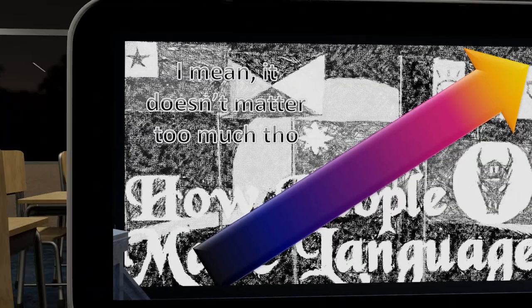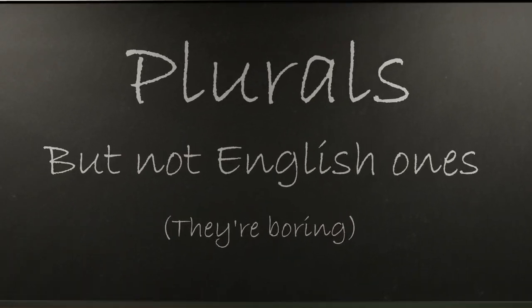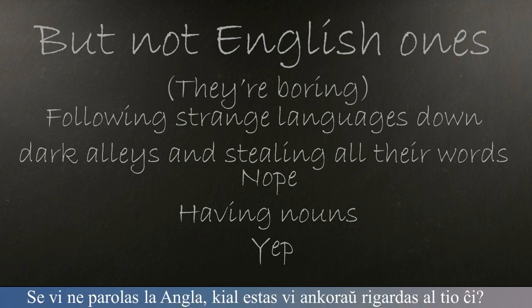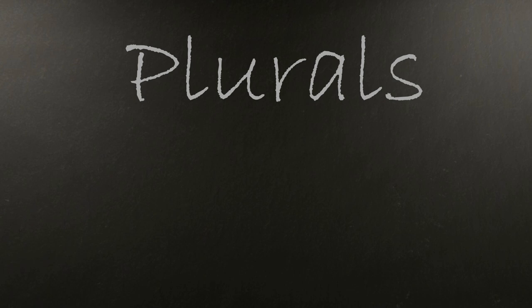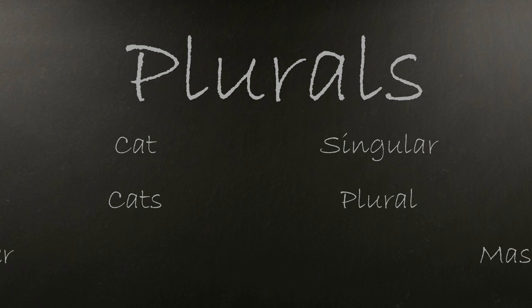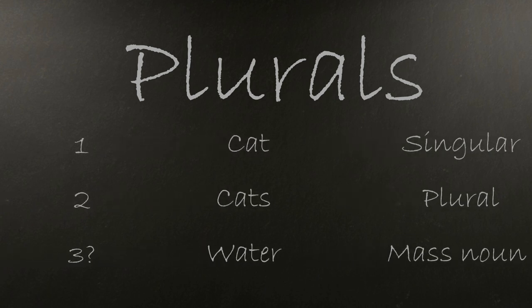So first things first: plurals. For the sake of this particular set of videos, I'm going to make a point to avoid overly English-y features — I'm going to make it the complete antithesis of English. In English, all nouns have plurality. They're either singular, plural, or a mass noun, which is something considered to be uncountable by the language. So you can have one, two, or three apples, but not one, two, or three water. Instead, for water you need additional constructions making the quantity clear, like one, two, or three buckets of water.